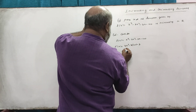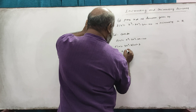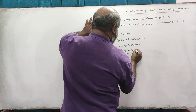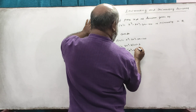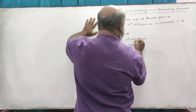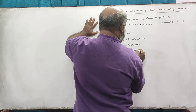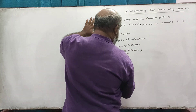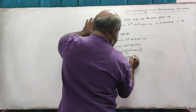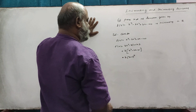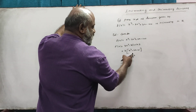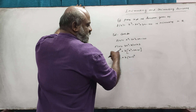Now, if f'(x) is equal to 0, then you will be equal to 2x squared minus 2x plus 1. This is plus 1, and this is 3. This simplifies to x minus 1 whole square. Now, x minus 1 whole square is equal to x minus 1 whole square — the square term.